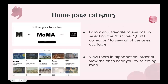You also have the opportunity to follow your favorite museums by selecting the Discover 3000 Plus Collection button, and from there you'll be able to see all of the museums available. You can view them in alphabetical order, or you can even view the ones that are nearest to you by selecting the map. There are lots of different ways you can navigate through the website.